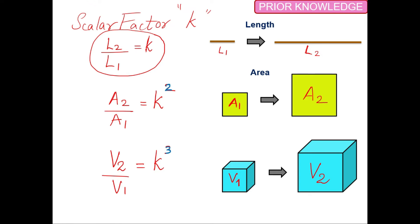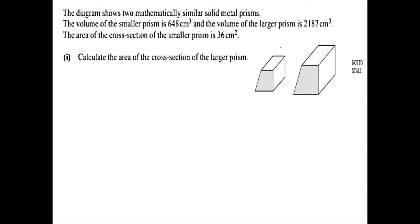Let me read the question. The diagram shows two mathematically similar solid metal prisms. The volume of the smaller prism is 648 cm³ and the volume of the larger prism is 2187 cm³. Calculate the area of the cross-section of the larger prism.